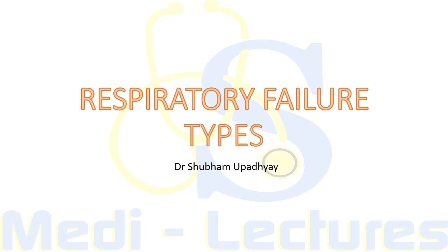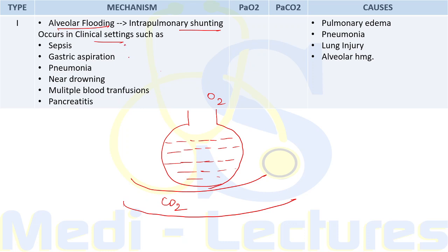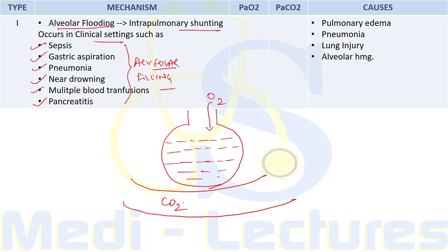Type 1 respiratory failure occurs due to alveolar flooding leading to intrapulmonary shunting. In this type, the alveoli are filled with fluid due to conditions like sepsis, aspiration, pneumonia, drowning, multiple blood transfusions, pancreatitis, or pulmonary edema. Due to this alveolar filling, oxygen cannot diffuse through the alveolar barrier and reach the blood vessel.